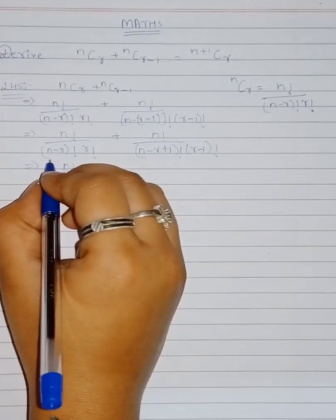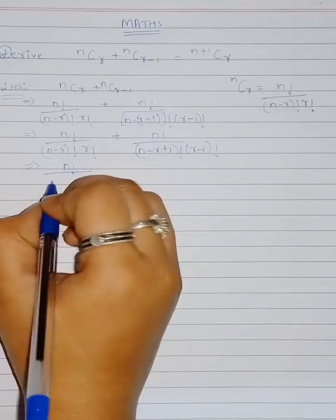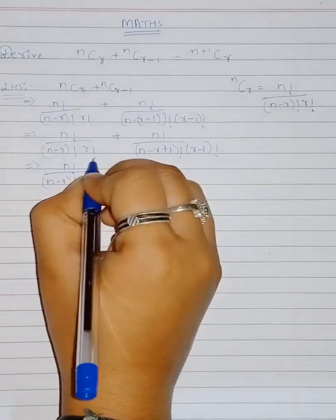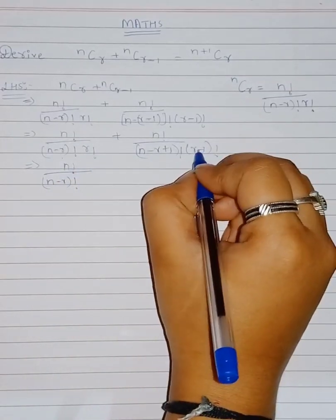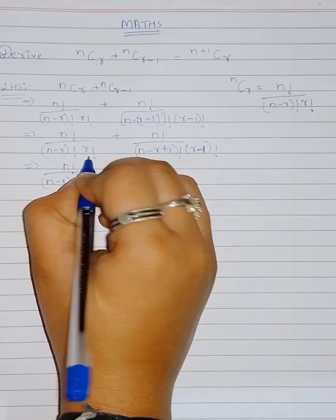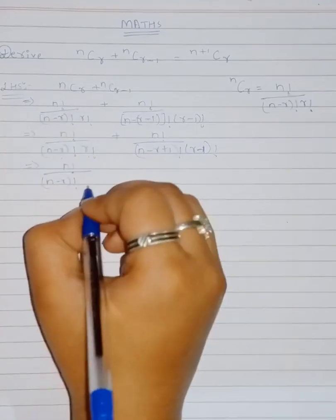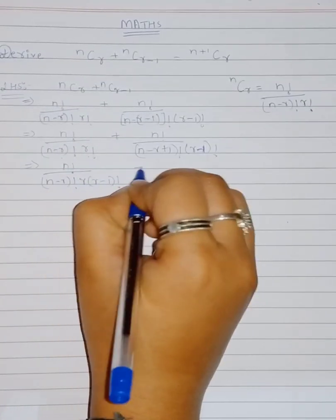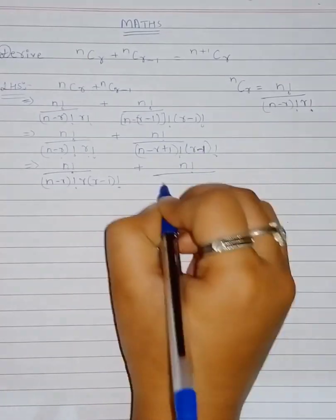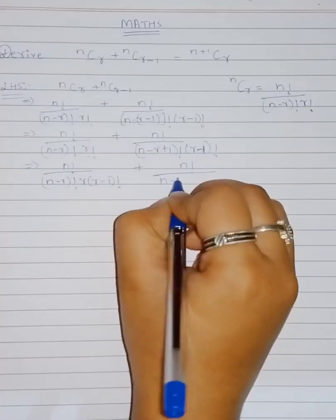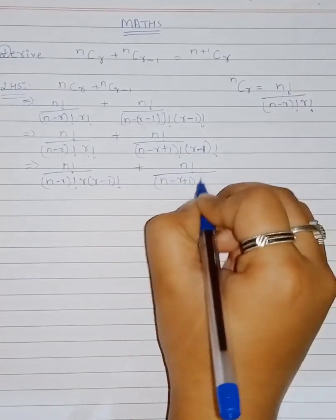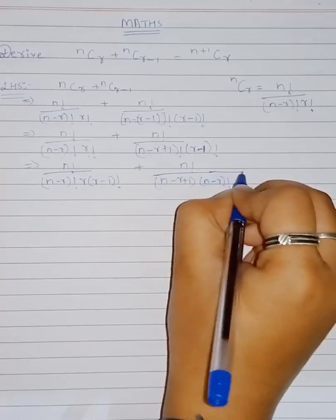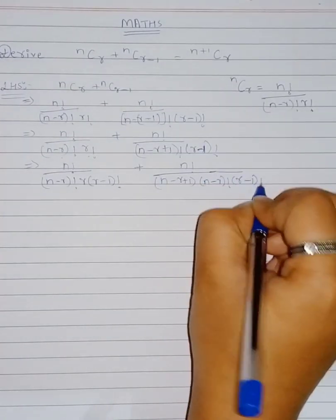No need to separate the first denominator further. We write it as it is. For r! and (r−1)!, since r! is greater, we write r! as r · (r−1)!. So the expression becomes: n! / [r · (r−1)! · (n−r)!] + n! / [(n−r+1)! · (n−r)! · (r−1)!].